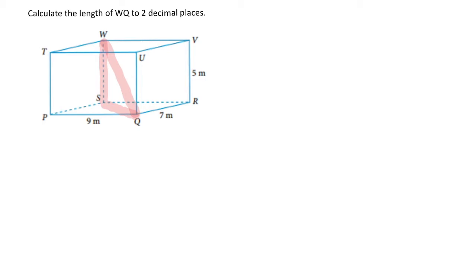So off to the side, I'm going to draw that triangle. Marking in the letters, I've got W, I've got S, and I've got Q. My unknown side is WQ, so I'm going to mark that as an X.